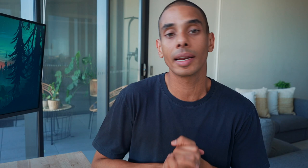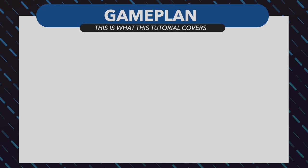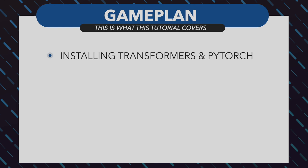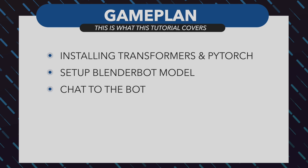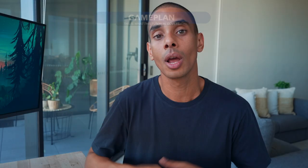In this video we're going to be focused on leveraging Facebook's BlenderBot model through Hugging Face Transformers. This is an open source Python library that allows you to leverage some of the most state-of-the-art natural language processing models based on transformer architecture. Specifically, we'll install our dependencies — PyTorch and the Transformers library — download the BlenderBot model, build our input, convert that to tokens, and generate a conversation.